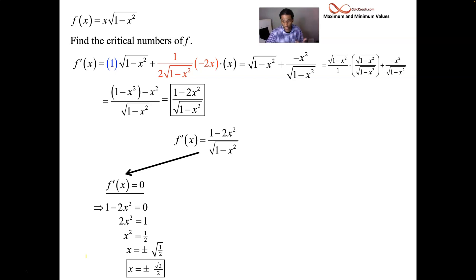Numerator equals zero means the derivative is zero. Denominator equals zero means that the derivative is undefined. Okay. So, root 1 minus x squared equals zero. We square both sides this time. And we get that x is plus or minus one.